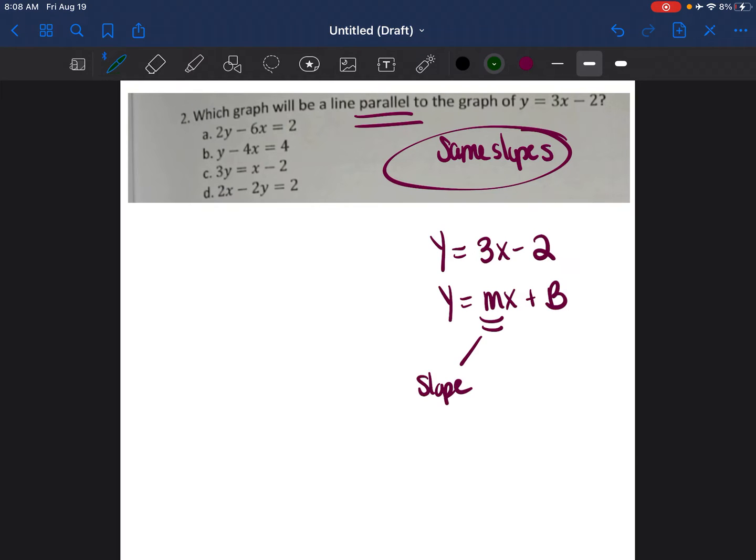So in this situation, the value written before the X is the 3. So I know for this line, my slope is equal to 3. All I have to do is go through these choices and see which one of these lines also has a slope of 3. That will be the line that's parallel to this original line.